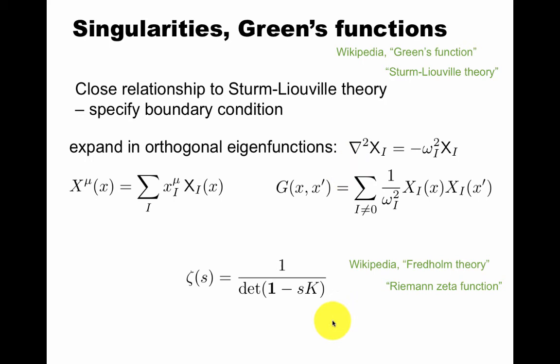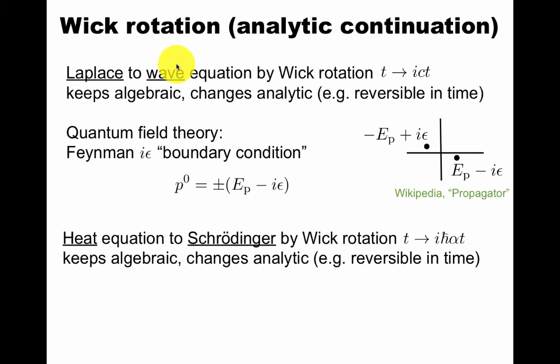The Fredholm kernel K that I mentioned before, you can now define a Riemann zeta function with a determinant with this s. I won't get into this here, but I think it's useful to have heard that if you can expand in eigenfunctions, there's a natural construction of a Riemann zeta function for any specific differential operator. In physics, we often do analytic continuation. So the Laplace and wave equation that we just talked about can be related by a Wick rotation to imaginary time. This keeps the algebraic structure of the original differential equation, but it changes the analytic structure. For example, the heat equation becomes the Schrödinger equation by a Wick rotation. And we know that the heat equation is not really reversible. If you start with a sharp edge, it gets smoothed out in time, whereas Schrödinger you can evolve back and forth.